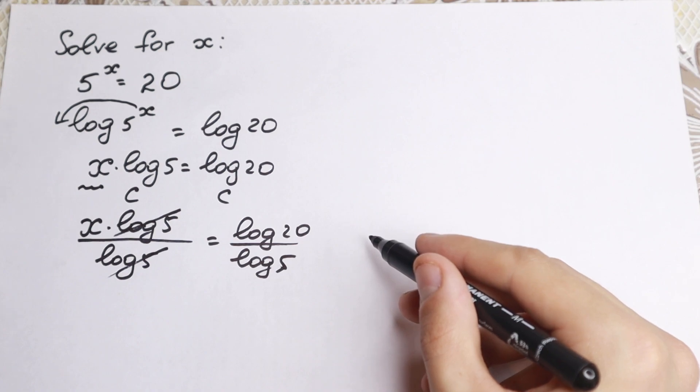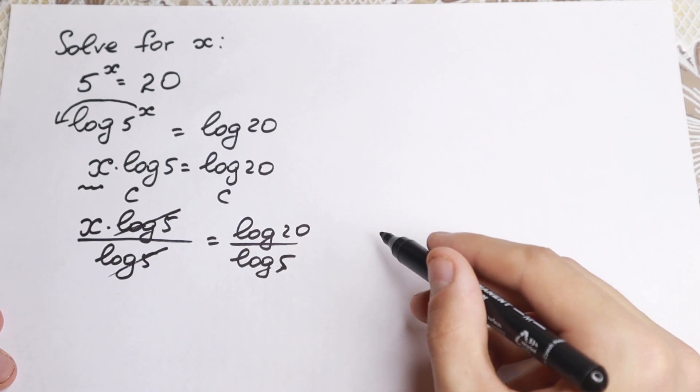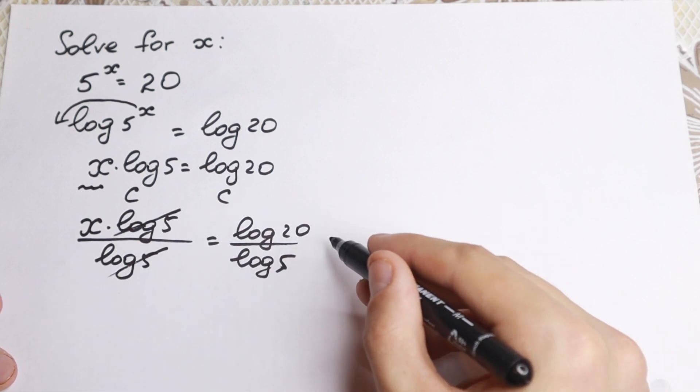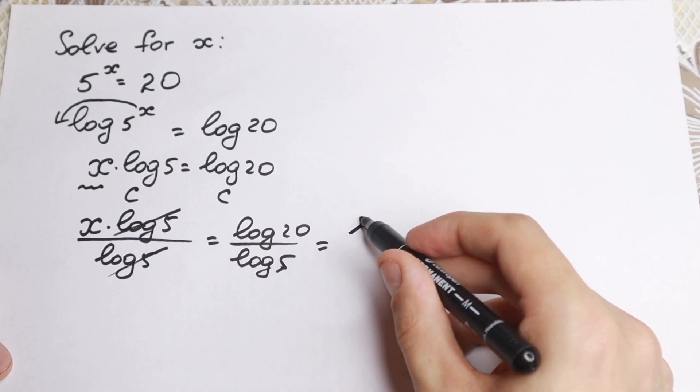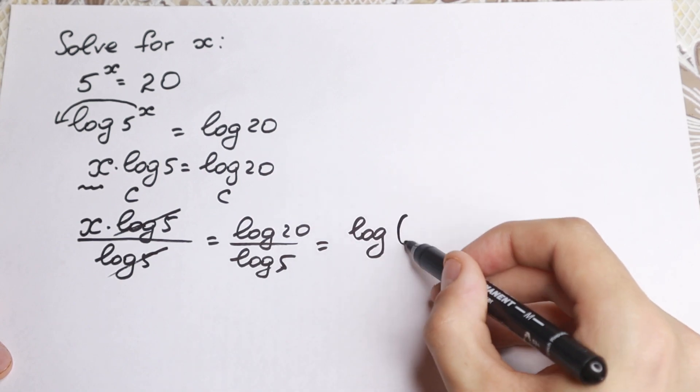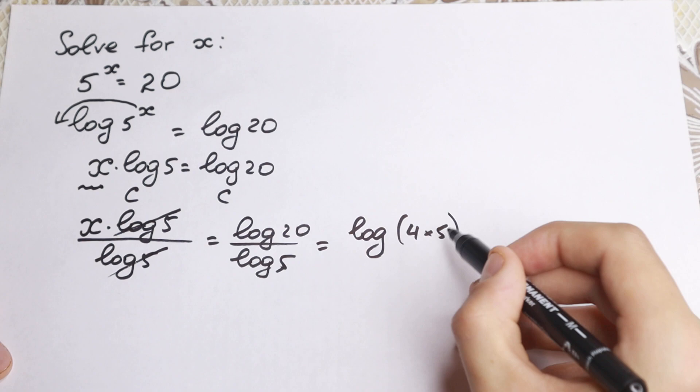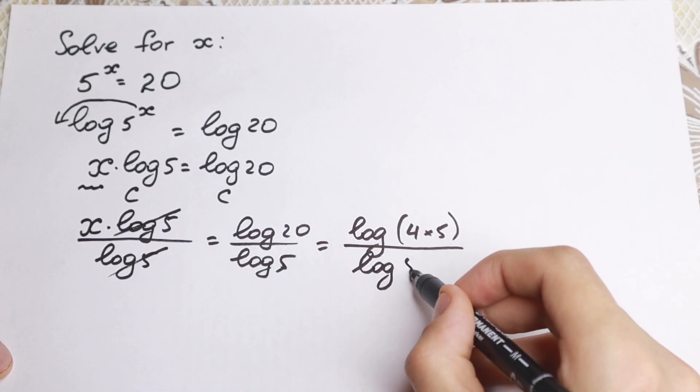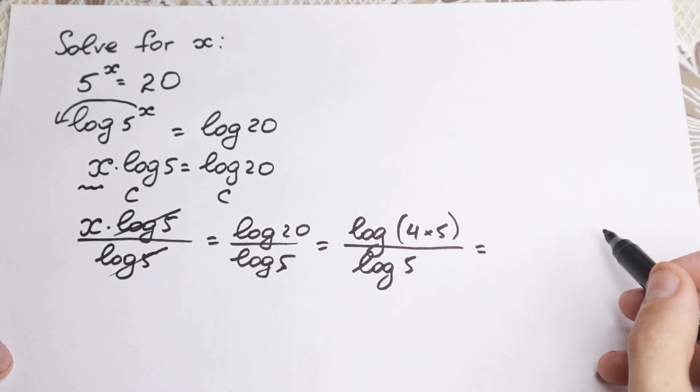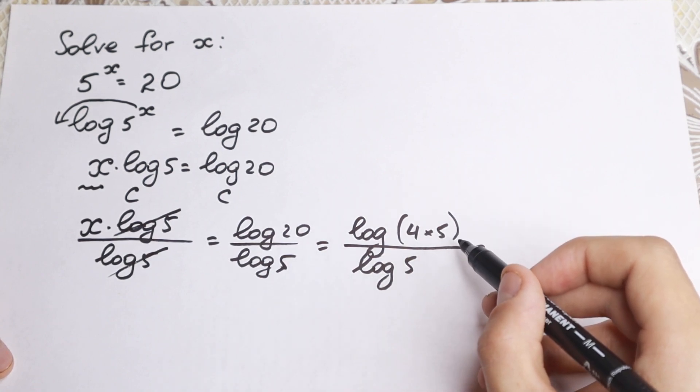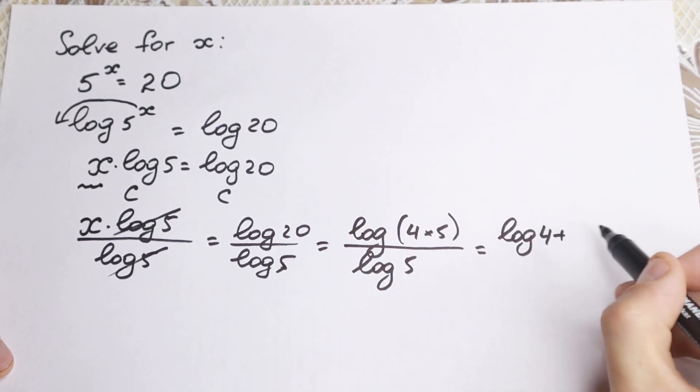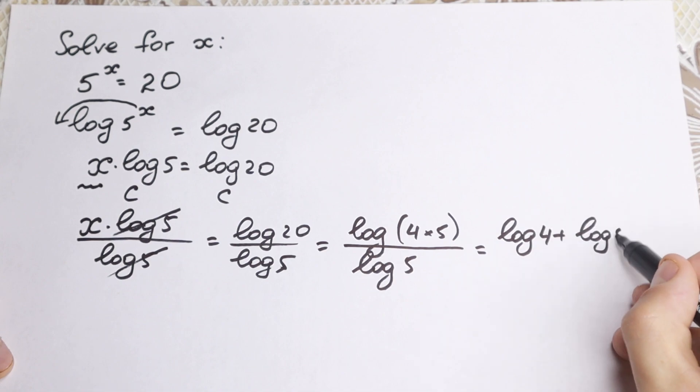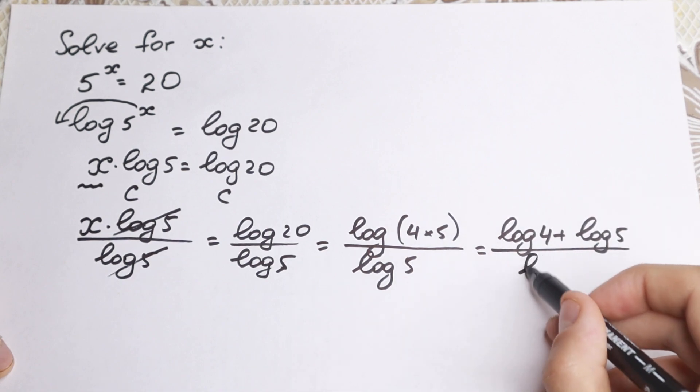But I want to show you a really good way how we can simplify this, because we learn math, we need to improve our math skills. This is not the final answer right here. This is equal to... I rewrite this 20 as 4 times 5, so we have logarithm 4 times 5 over log 5. And right now we need to know a really good log property, because if we have a log of product, we can write it as a sum of logarithms, so log 4 plus log 5 over log 5.